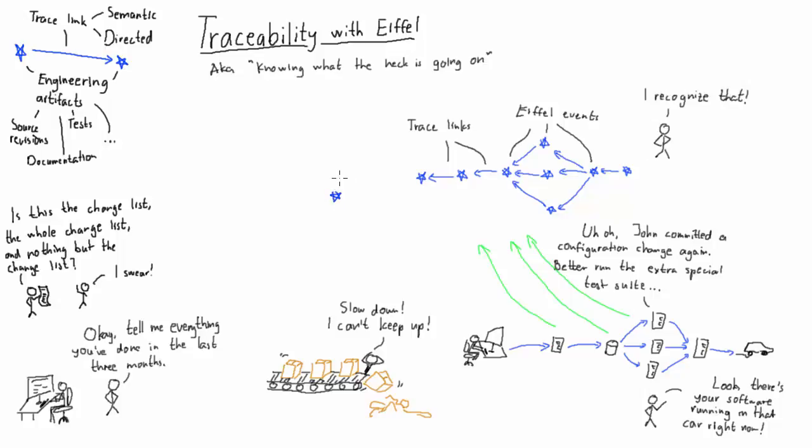To illustrate the point, let's take a very simple example. An EiffelArtifactCreatedEvent declares that an artifact has been built. It references other events to declare the environment in which it was built and the composition it was built from. The composition in turn identifies its elements, such as other artifacts or source changes. With this information alone, we can already answer a number of the traceability questions we started out with.